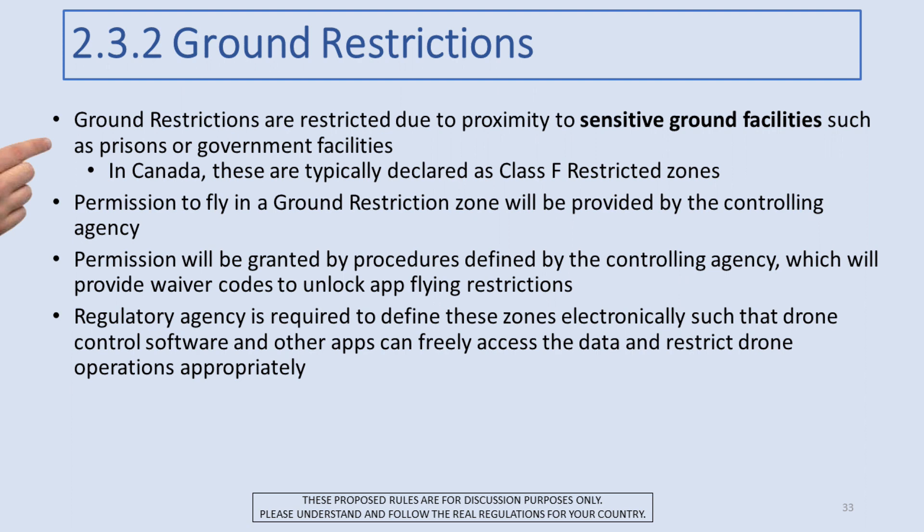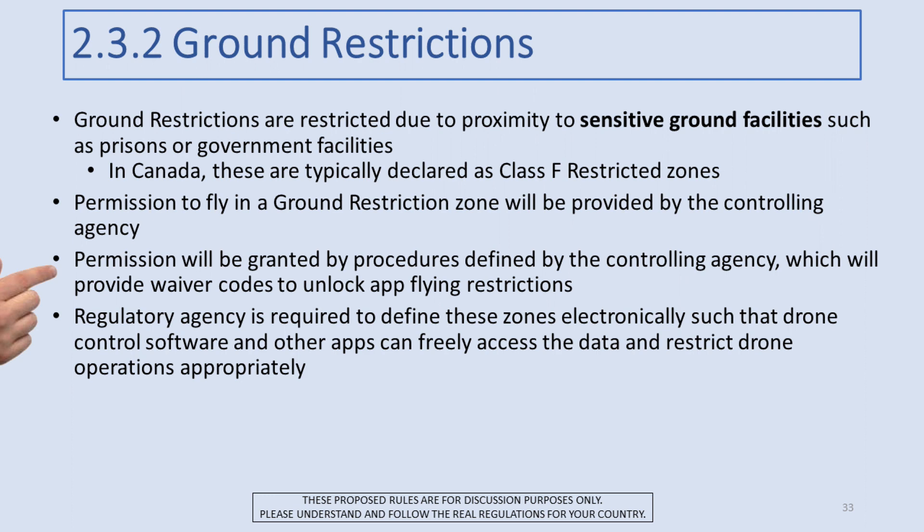Ground restrictions are a lot easier. They are restricted due to proximity to sensitive ground facilities such as prisons or government facilities. In Canada, these are typically declared as Class F restricted zones and exist around prisons, Parliament Hill, Niagara Falls, and similar locations. Permission to fly in a ground restriction zone will be provided by the controlling agency defined for each zone, which will provide waiver codes to unlock any app flying restrictions. The regulatory agency is required to define these zones electronically so that drone control software can freely access the data.